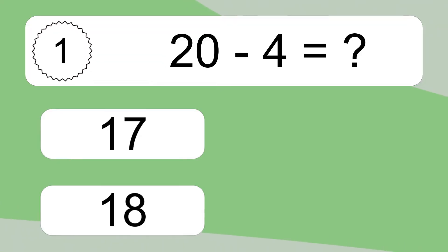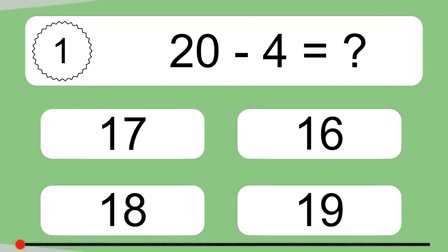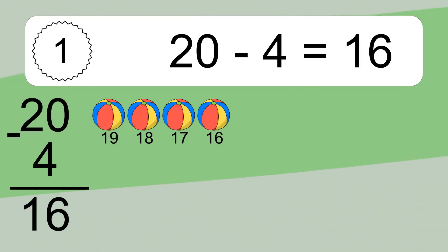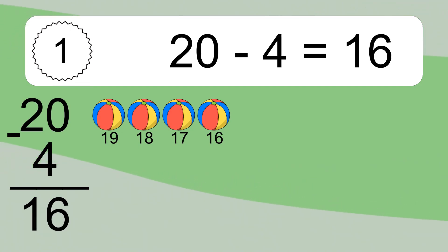20 minus 4 equals what? 20 minus 4 equals 16. Let's count it: 19, 18, 17, 16.